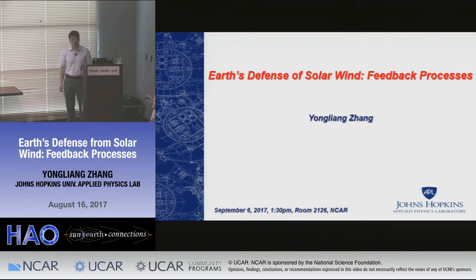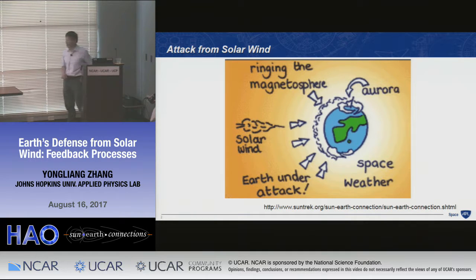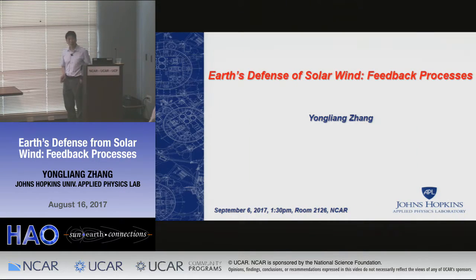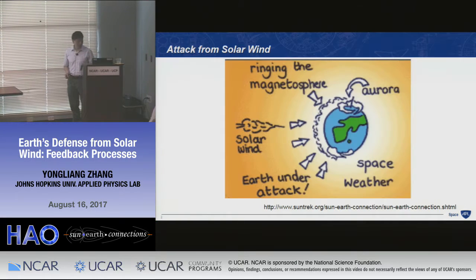I'm glad to be here to share my very limited personal view on the interaction between solar wind and geospace. This is a very broad topic, but I will focus on a very narrow area. The title is motivated by a cartoon from the internet: Earth is under attack from the solar wind. If there's some attack in geospace, you need to fight back, otherwise you could destroy geospace. So there must be some feedback processes that keep geospace stable — some negative feedback process to bring it back to quiet conditions.